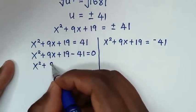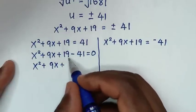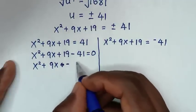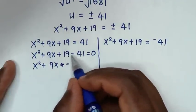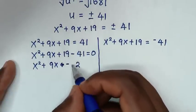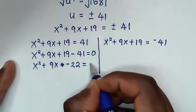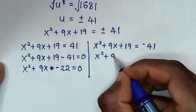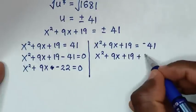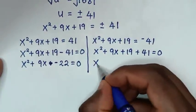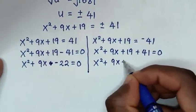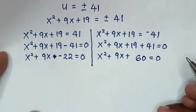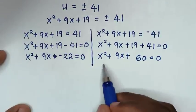From the second solution, x²+9x+19 = -41 gives x²+9x+60 = 0. From the first solution, x²+9x+19 = 41 gives x²+9x-22 = 0. Now we check which of these quadratic equations gives a real solution.